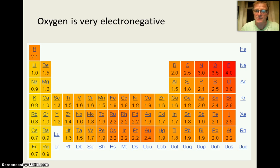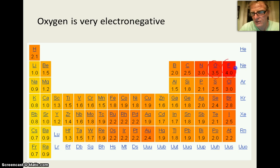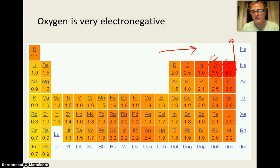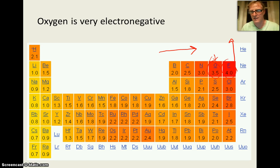If we look at electronegativity — how much an atom wants an electron — oxygen is second only to fluorine in terms of electronegativity. It's going to really badly want to pull electrons in towards it. We tend to see strong electronegativity with oxygen. When it forms a bond with hydrogen, hydrogen is not electronegative at all and is more likely to give up its electrons.